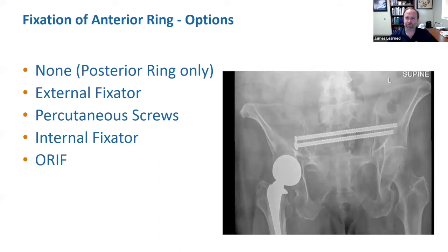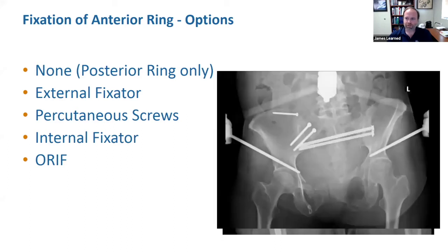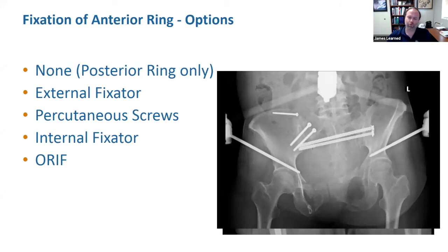There are many options for anterior fixation. One option is posterior fixation only — here a patient was treated with two transiliac transsacral screws with no cranial displacement on outlet view, and the choice was made to avoid anterior incisions. An external fixator can stabilize the anterior ring, which is especially helpful in comminuted or parasymphyseal injuries where ORIF is relatively contraindicated — such as an indwelling suprapubic tube, open abdomen, high-energy injury, or a pre-existing wound or infection where implants would be inadvisable.